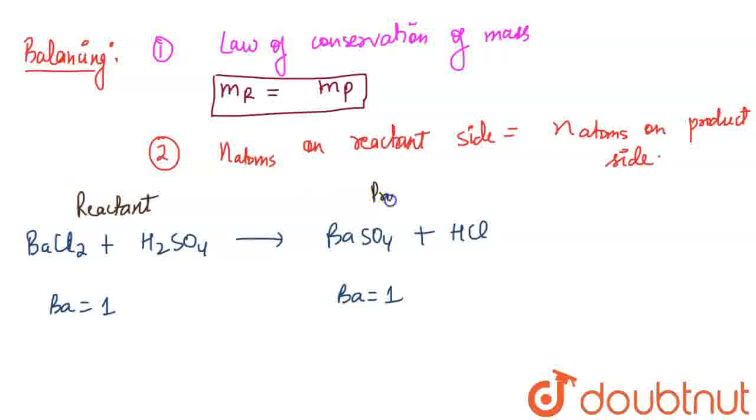Barium is one atom, chlorine has two atoms but there is one atom, so I need to add two here also for chlorine. Here is hydrogen and here is hydrogen. Here is sulfur and oxygen, here is oxygen and sulfur.